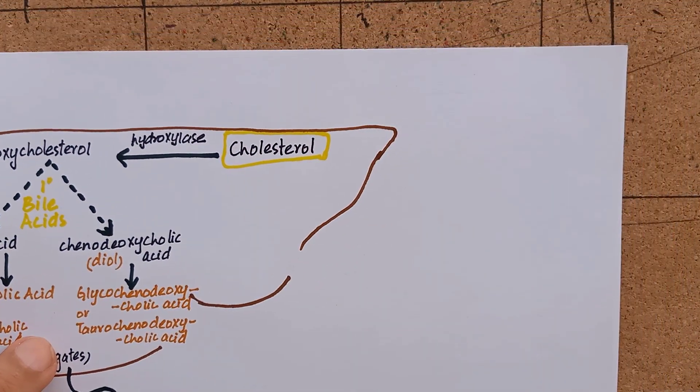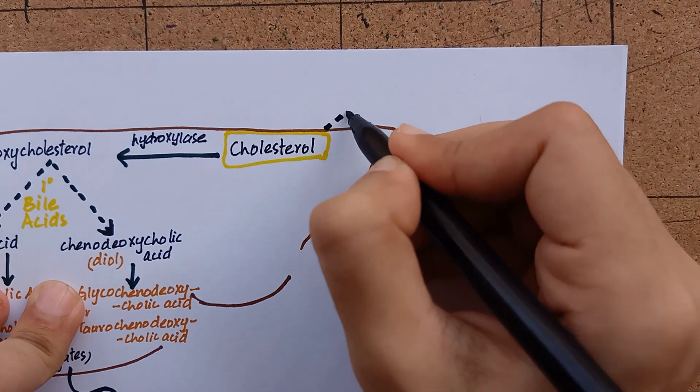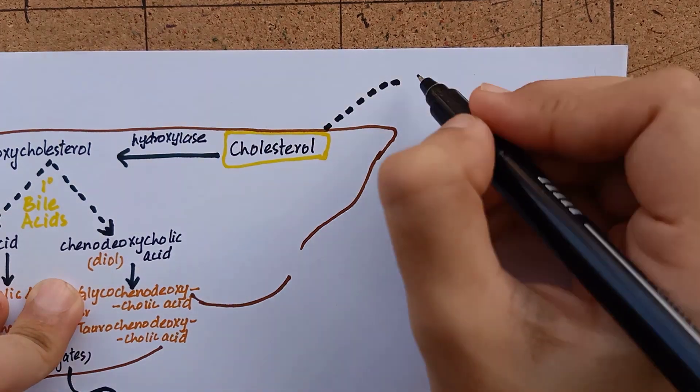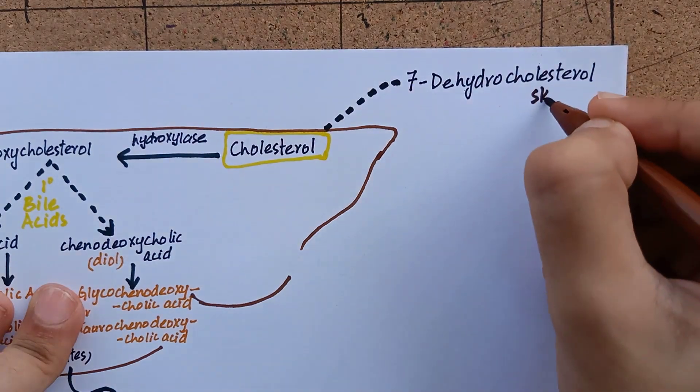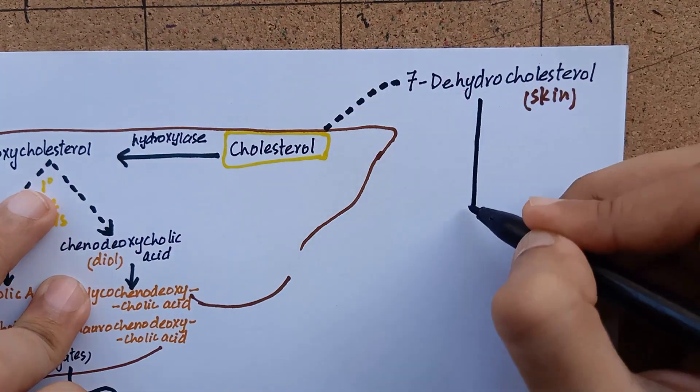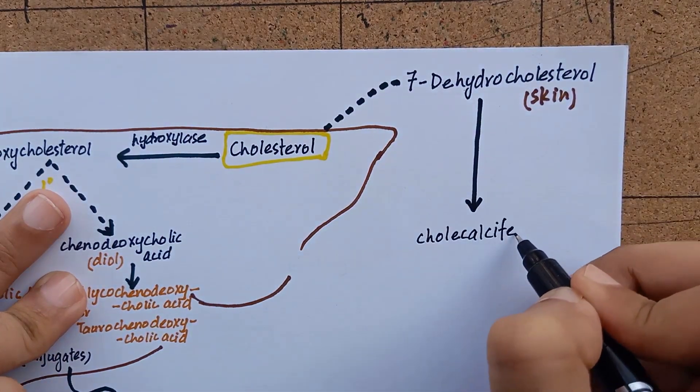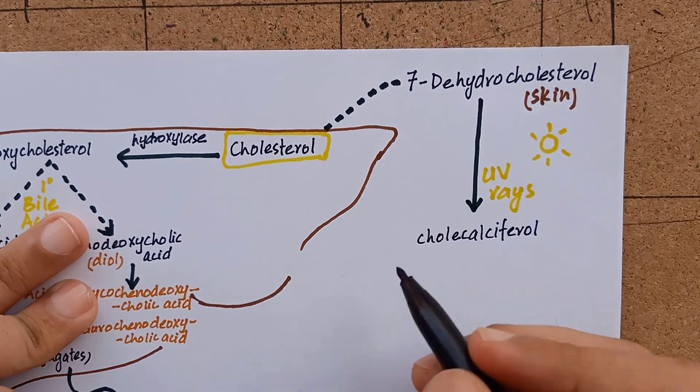Now coming to the second process of cholesterol clearance, which is vitamin D synthesis. 7-dehydrocholesterol is an intermediate in cholesterol synthesis which is present in skin. It is activated by ultraviolet rays and becomes cholecalciferol.